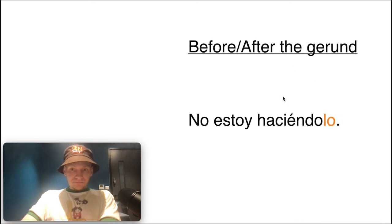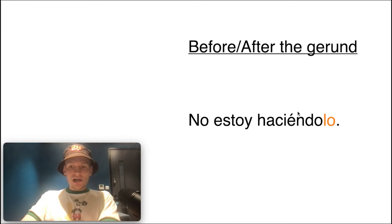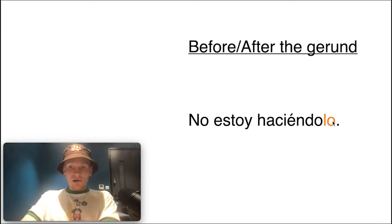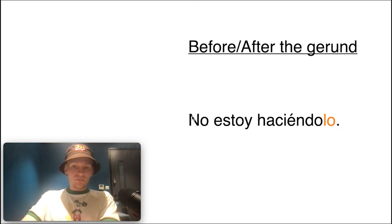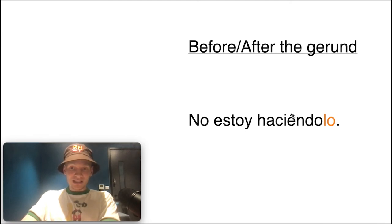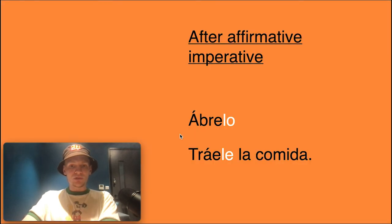With the gerund — jugando, tomando, haciendo — the pronoun can attach to the end of the gerund: no estoy haciéndolo. Or it can come before the conjugated verb: no lo estoy haciendo. The easy option is no estoy haciéndolo. Note: you normally wouldn't have an accent on haciendo alone, but when you add the object pronoun at the end you need to add the accent — haciéndolo — to preserve the stress.